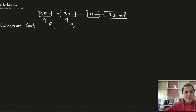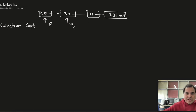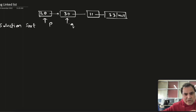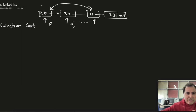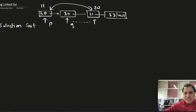For every value of p, q will traverse the list. Whenever q finds a smaller value than p, it will swap. In this procedure, q will traverse and when q reaches 11, the values 11 and 20 will get swapped. We will write a swapping function for this.